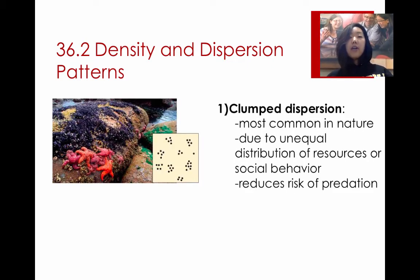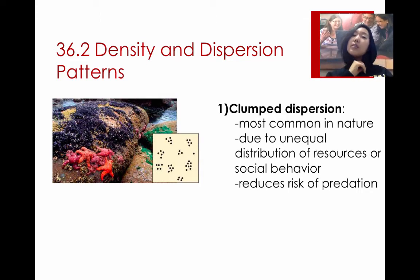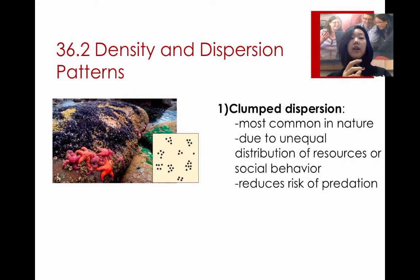The first kind of dispersion pattern is clumped dispersion. This is when you see groups of individuals that are clustered together in little pods. This is the most commonly noticed in nature, and the reason why is because very often in nature we have an unequal distribution of resources. So individuals will cluster in an area where the resources are. Other reasons why we might see clumped distribution include social behavior — animals that like to congregate together will do so.